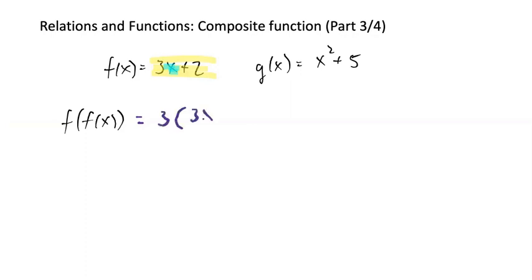3, 3x plus 2, plus 2. So the blue would be here and the yellow would be 3 and 2.